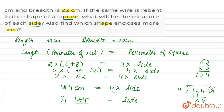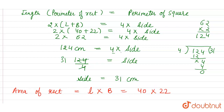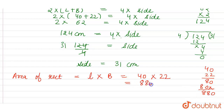Also, this question asks us to find which shape encloses more area. So we have to find the area of the rectangle and the area of the square. Firstly, the area of rectangle — the formula is length into breadth. Length is 40 cm, breadth is 22 cm. So 40 into 22 equals 880 cm square. The area of the rectangle is 880 cm square.